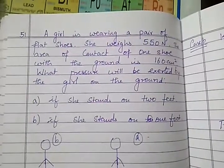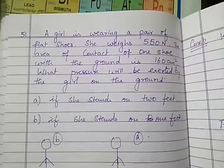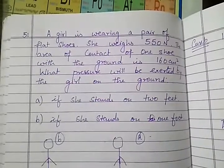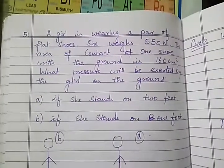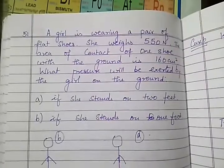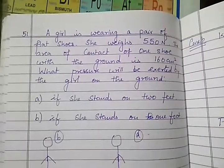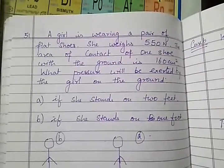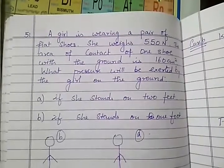The area of contact of one shoe with the ground is 160 centimeters squared. What pressure will be exerted by the girl on the ground? A if she stands on two feet and B if she stands on one foot.